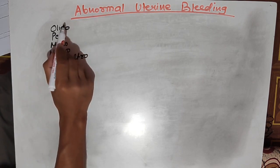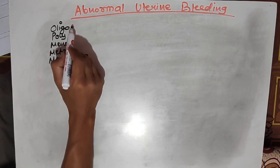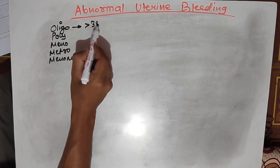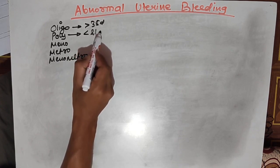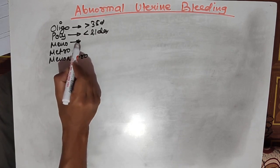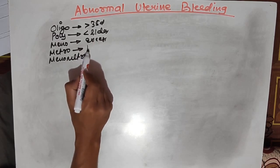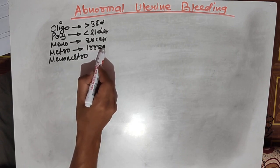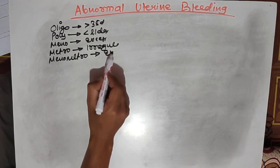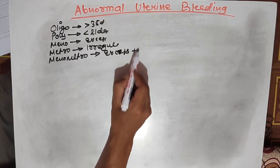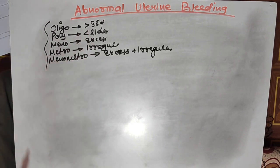Oligomenorrhea means the cycle of menstruation is more than 35 days. Polymenorrhea means the cycle is less than 21 days. Menorrhagia is excessive bleeding during the menstrual cycle. Metrorrhagia is irregular cycle bleeding.